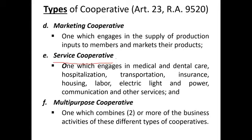But if the primary purpose is to insure the life and property of members, it becomes an insurance cooperative. If the primary purpose is to provide housing to members, it becomes a housing cooperative. A multi-purpose cooperative is one which combines two or more of the business activities of these different types of cooperatives. So if you combine consumer and credit cooperative, it becomes a multi-purpose cooperative.